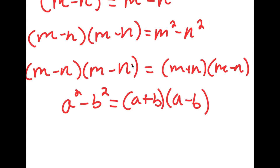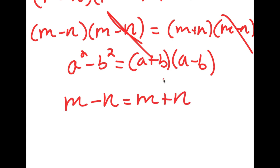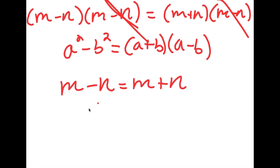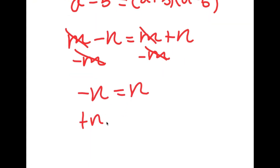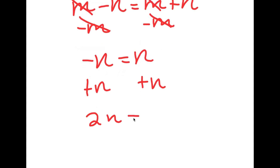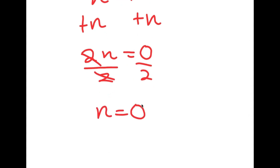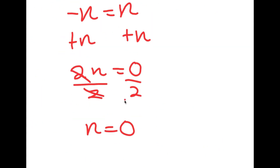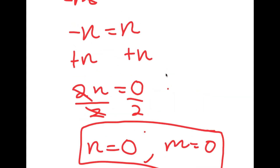So now we can simply divide both sides by m minus n and cancel these two out. Now I'll be left with m minus n is equal to m plus n. Meaning if I subtract m on both sides, I get negative n is equal to positive n. If I add n on both sides, I get 2n is equal to 0, meaning n is also equal to 0. And if n equals 0, then m is also equal to 0. So these are my two solutions to this equation.